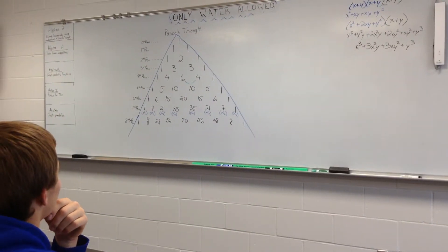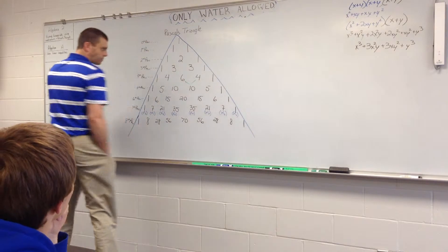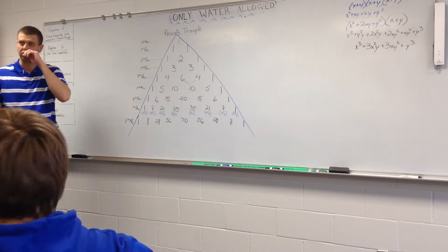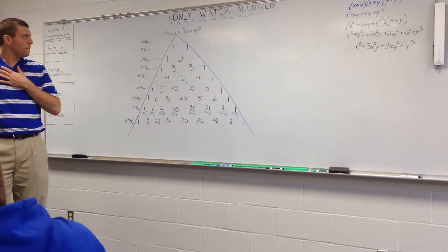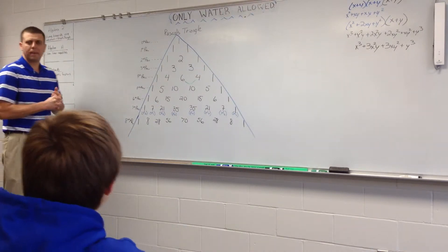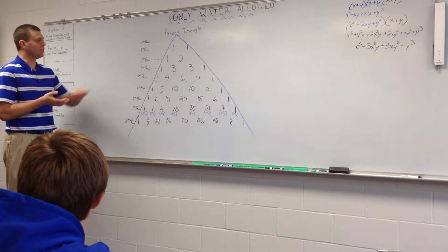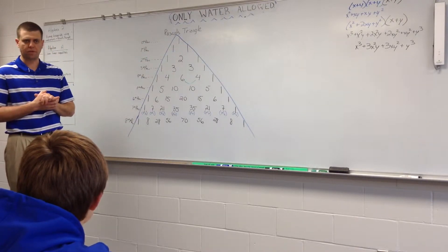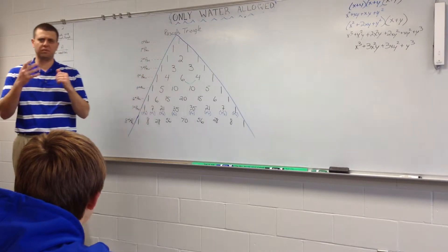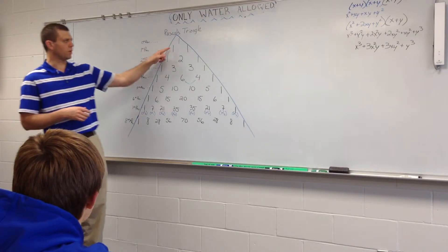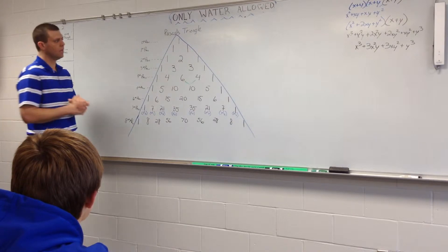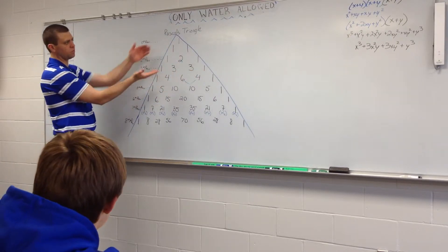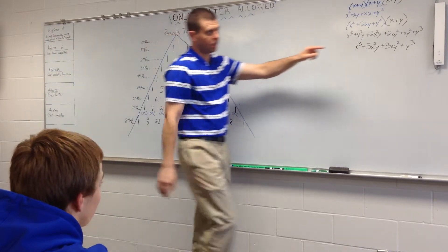Pascal's triangle is what you see here — I did 8 rows of it. I'd definitely put the first 6 or 7 rows in your notes. Pascal's triangle is a unique pattern of numbers. We start with the 0th row, because anything raised to the 0th power equals 1, so we put a 1 there. The first row has 1 and 1. The second row goes 1, 2, 1. The third row goes 1, 3, 3, 1. You start to see the same numbers that appeared in our binomial expansions.